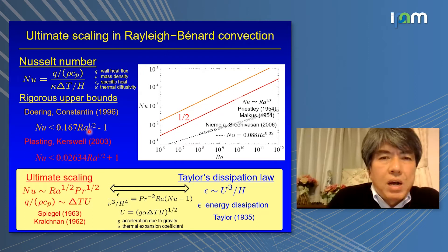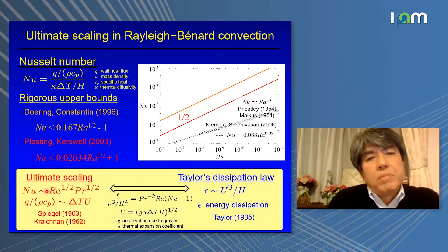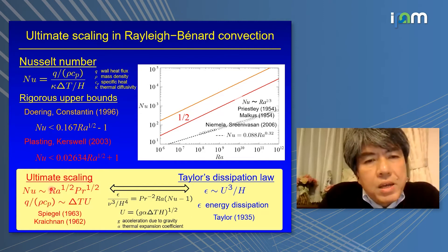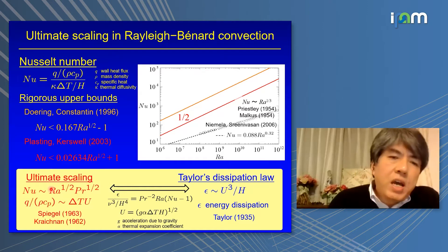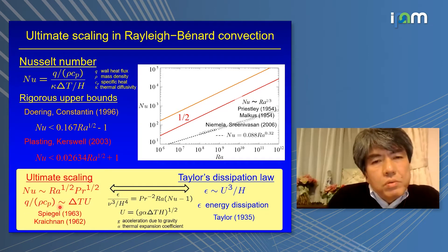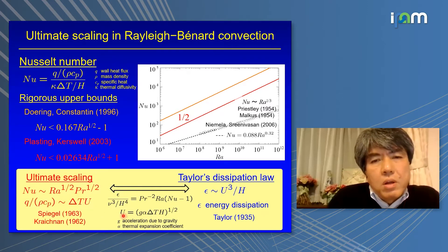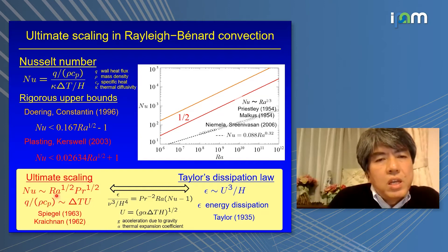In this upper bound, we see the factor Ra^(1/2). This Ra^(1/2) scaling of Nusselt number was given by Spiegel long ago for extremely high Rayleigh number thermal convection. In this scaling, wall heat flux scales with temperature difference and buoyancy-induced terminal velocity, and is independent of thermal diffusivity. This is the ultimate scaling.